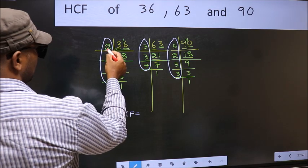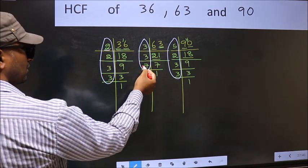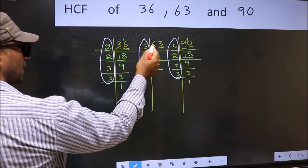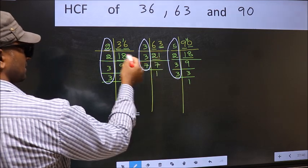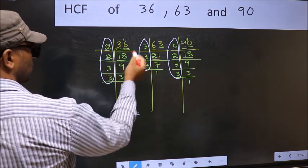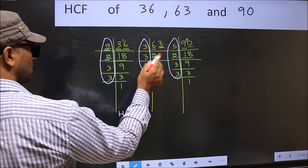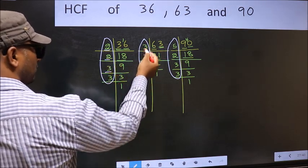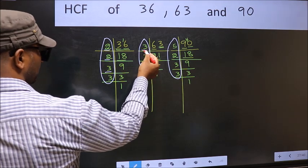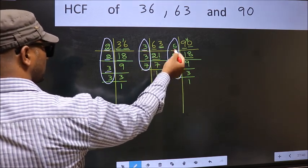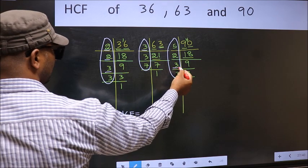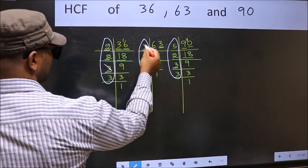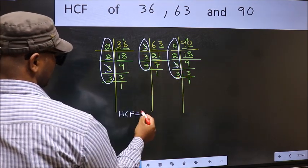Starting with the number 2. Do we have 2 here? No. So, no need for us to check in the other place. Next number 2. Do we have here 2? No. So, no need for us to check in the other place. Next number 3. Do we have 3 here? Yes. So, go to the next place. Do we have 3 here? Yes. So, cut 3 right here.